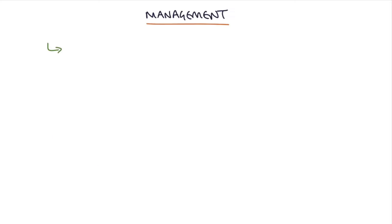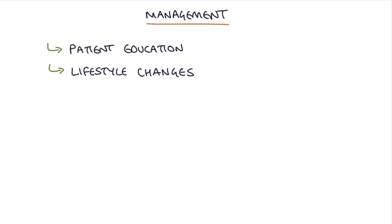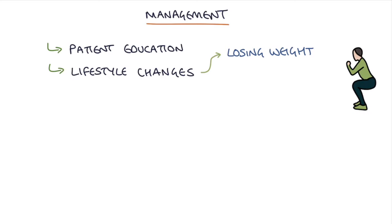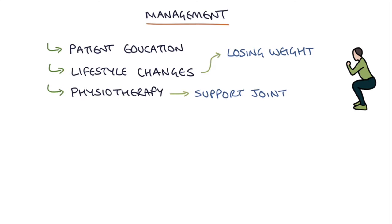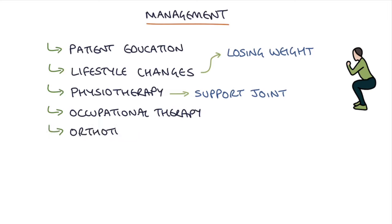For management, it's important to start with patient education and advise lifestyle changes like losing weight if overweight, which helps reduce the load on the joint. Physiotherapy can improve the strength and support of the joints, and occupational therapy can help maximize the function of the remaining joint. Orthotics can also be used to support activities and function.